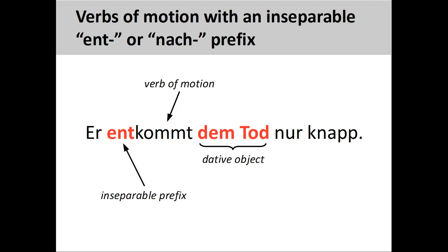Other rules are less ambiguous. For example, verbs of motion with an inseparable 'ent' or 'nach' prefix will always take a dative object. For example, 'er entkommt dem Tod nur knapp' — he barely escapes death. Here the verb of motion is 'kommen,' meaning to come, which has the prefix 'ent' attached to it. The prefix changes the meaning of the verb, although the sense of moving away from a threat is still retained.